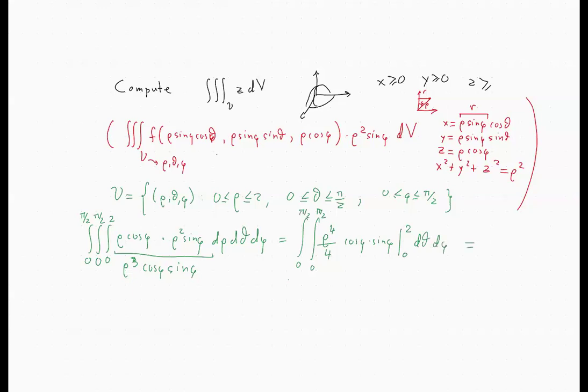If you plug in 2, you will get 16 over 4, which is 4. So you will have 0 to pi over 2, 0 to pi over 2, 4 cosine phi, sine phi d theta d phi. And now, in terms of theta, this is a constant. So the anti-derivative will be 4 cosine phi, sine phi times theta, and we go from 0 to pi over 2. And we have the last integration, which is with respect to d phi.